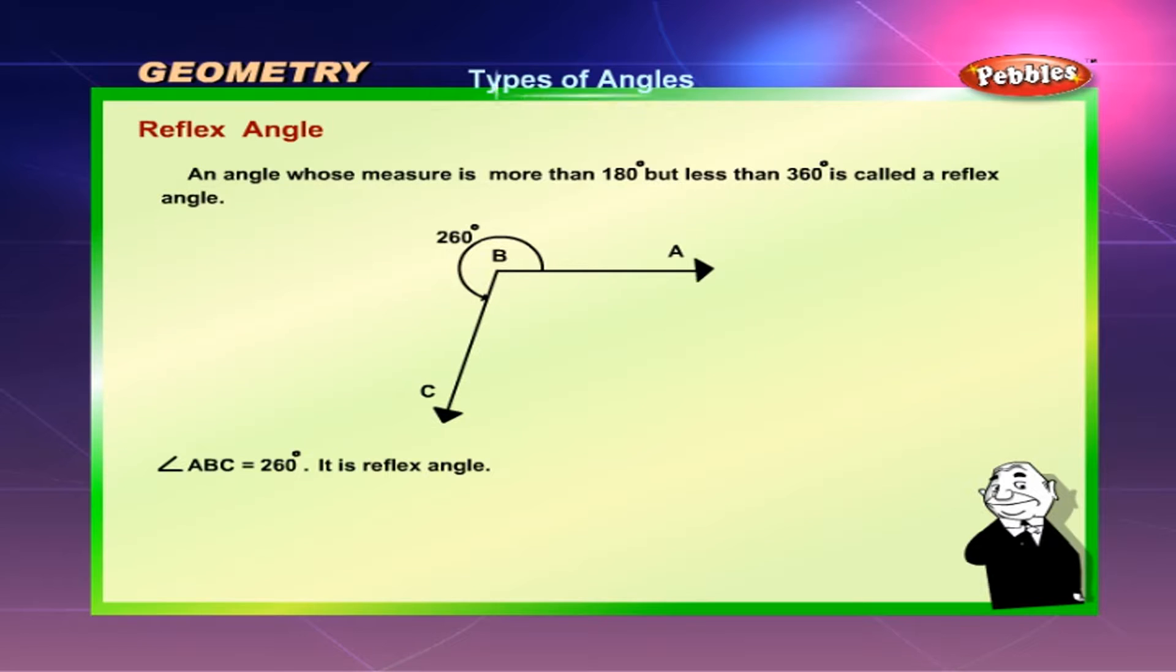Reflex angle. An angle whose measure is more than 180 degrees but less than 360 degrees is called a reflex angle. Angle ABC which is equal to 260 degrees is a reflex angle.